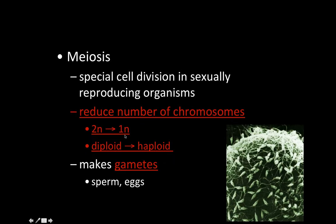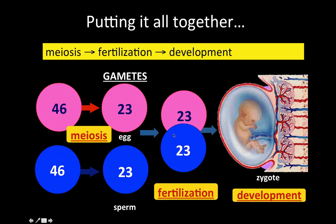Meiosis reduces the chromosome number from diploid to haploid. For humans, that means going from 46 chromosomes to 23 chromosomes. We take the diploid number — 46 chromosomes for females and 46 for males — put the egg and sperm together through fertilization, and fertilization makes a zygote.